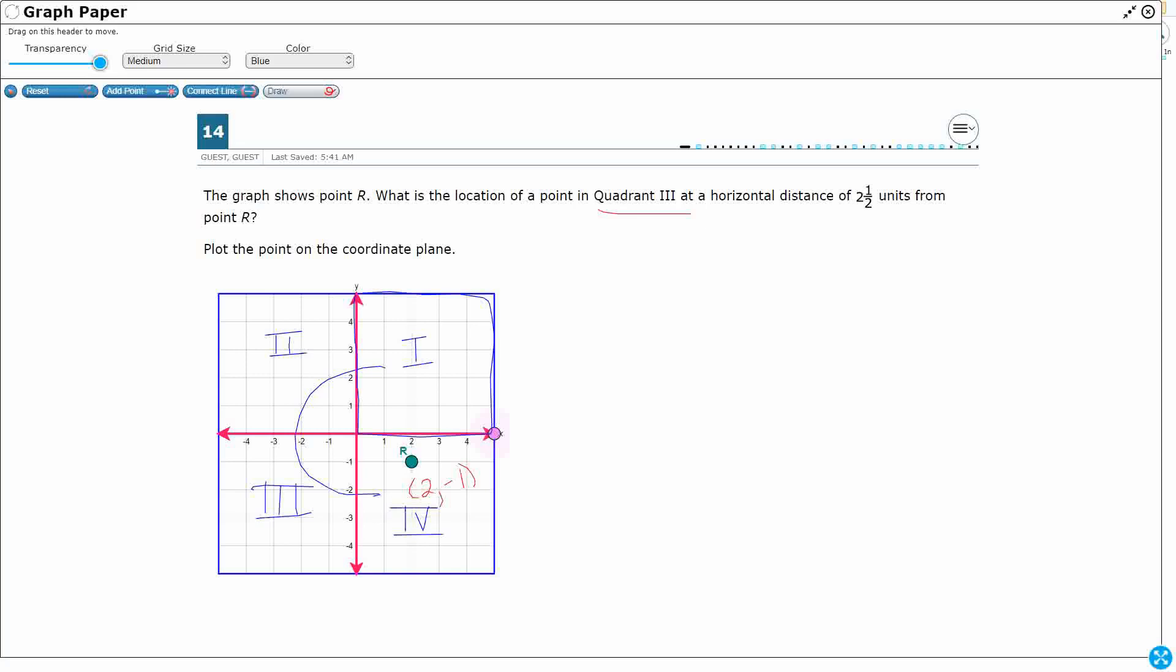So since we're going in quadrant 3, that means the answer needs to be in this, and I'll highlight this in green, in this quadrant right here. So my answer has to be over here. So that's extremely helpful, because now I know that I'm going to have a negative x and a negative y, because in quadrant 3, you have both negative x's and negative y's.